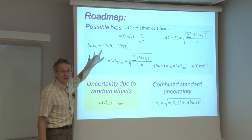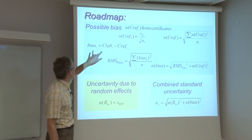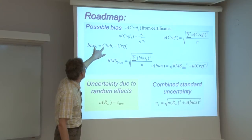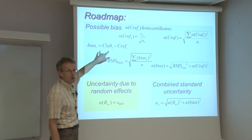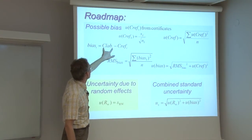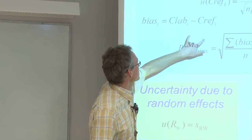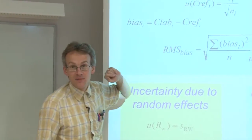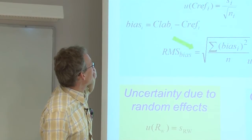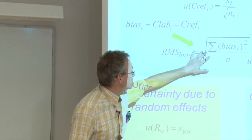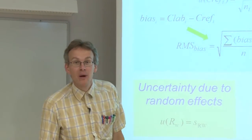We start by finding bias. Each individual bias value is found by numerous laboratory measurement results from which the reference value has been subtracted. Then these are averaged into the RMS bias.